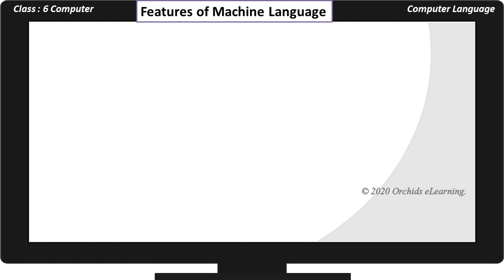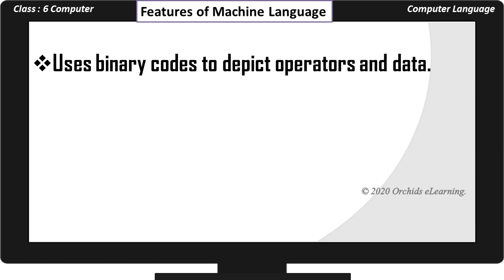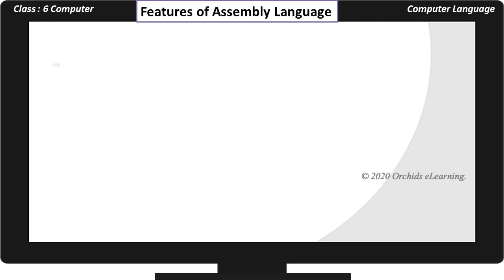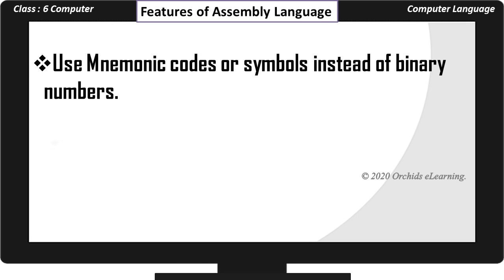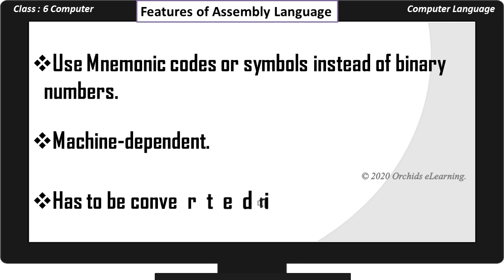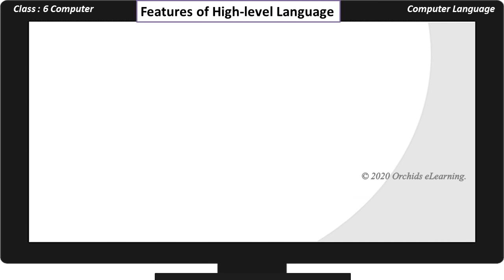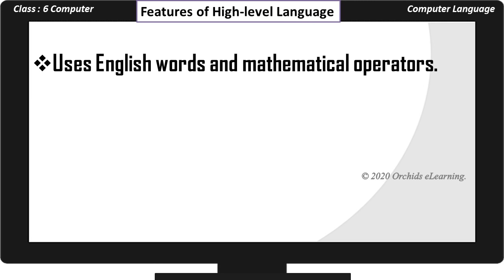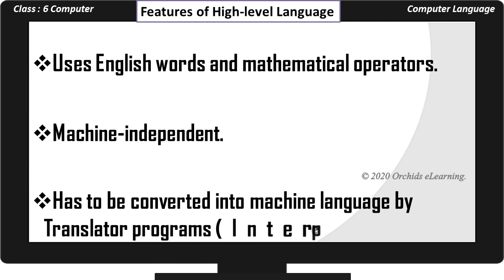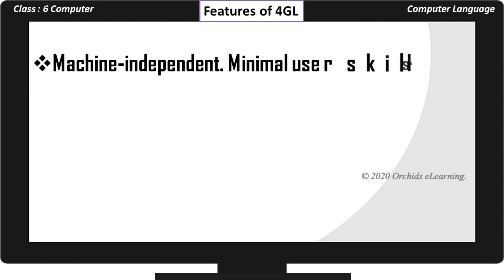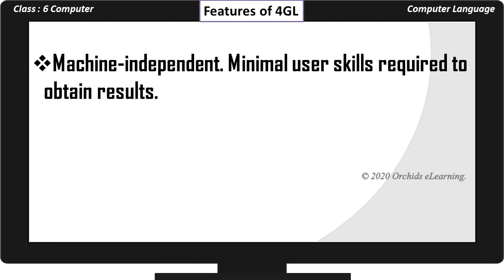Features of Machine Language: uses binary codes to depict operators and data; machine dependent; the only language directly understood by a computer. Features of Assembly Language: uses mnemonic codes or symbols instead of binary numbers; machine dependent; has to be converted into machine language by assemblers. Features of High Level Language: uses English words and mathematical operators; machine independent; has to be converted into machine language by translator programs — interpreters and compilers. Features of 4GL: machine independent; minimal user skills required to obtain results; application development tool.